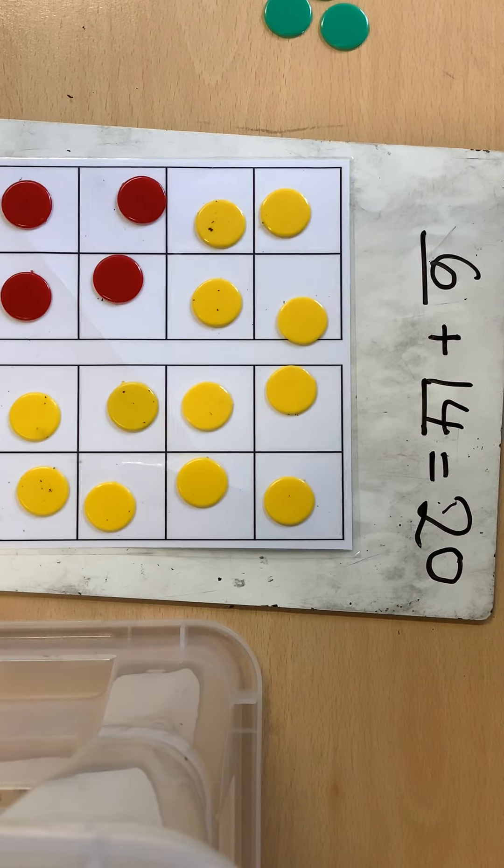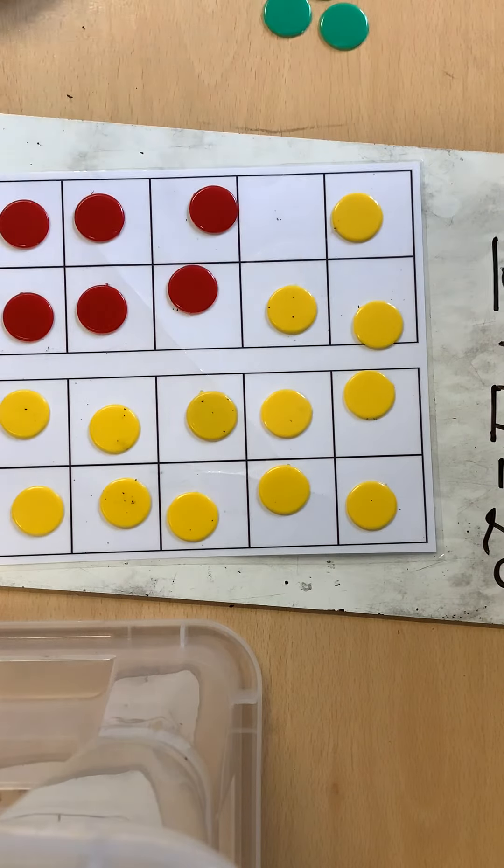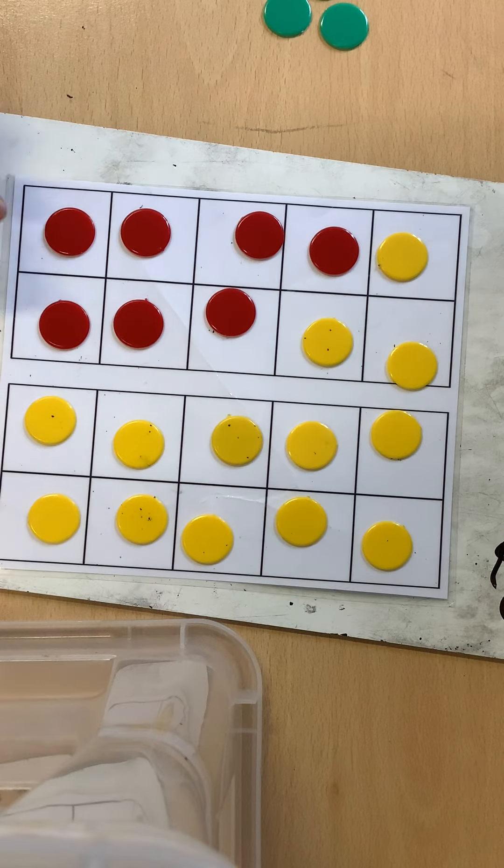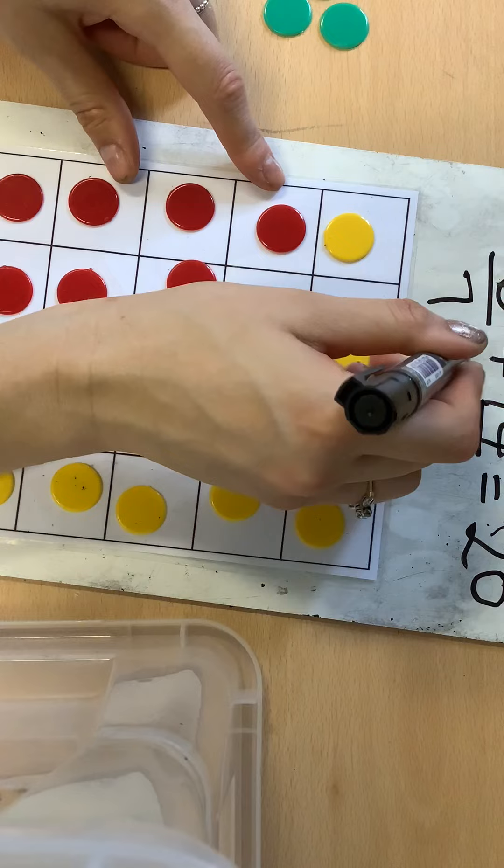How else could I make 20? Well I could swap one of these yellow counters for a red counter. Now I have one more than six. I have seven red counters.